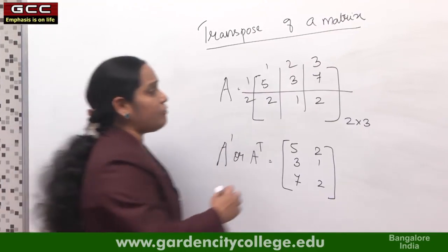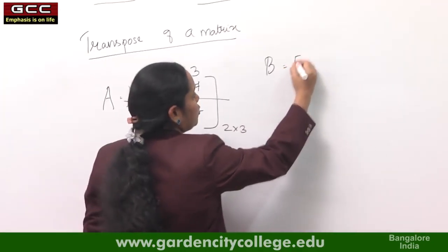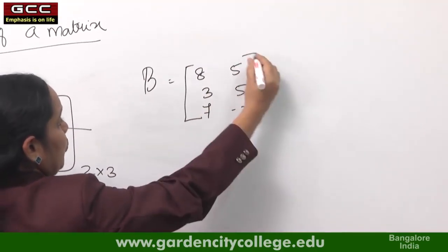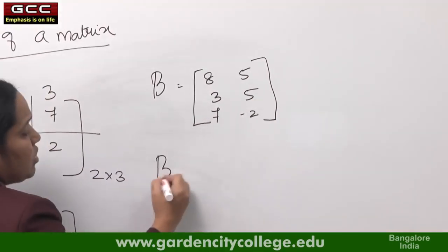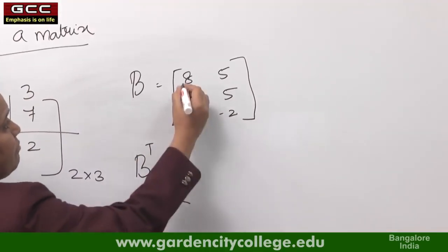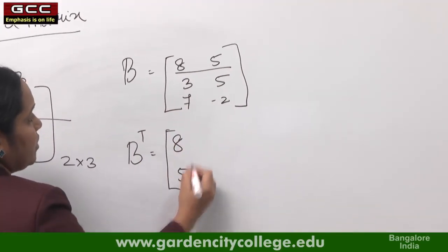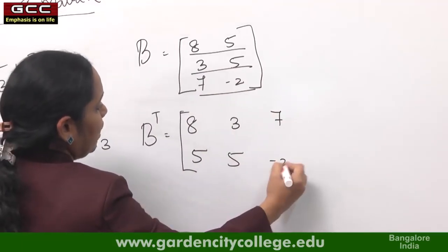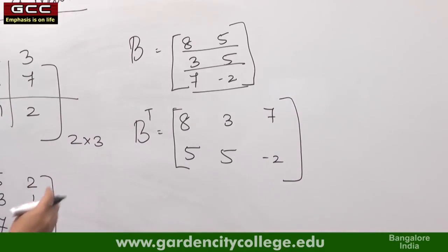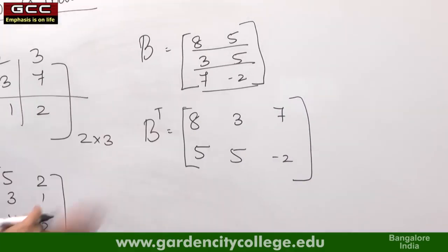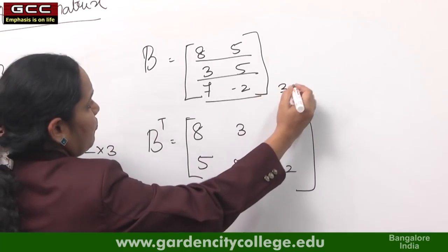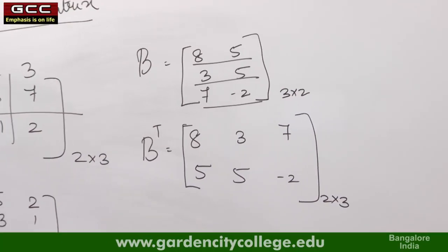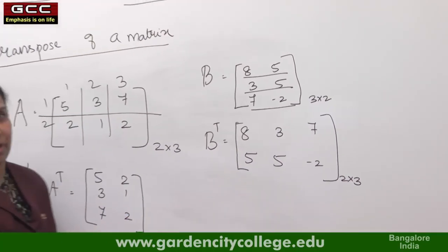Let me give one more example for the transpose of a matrix. B = [8, 5; 3, 5; 7, -2] is of order 3 by 2. The transpose B^T is found by making the first row the first column, the second row the second column, and the third row the third column. So the order changes from 3 by 2 to 2 by 3. Whenever you find the transpose, the order also changes accordingly.